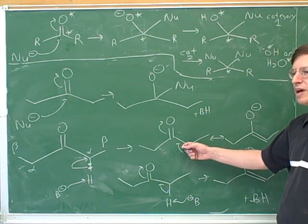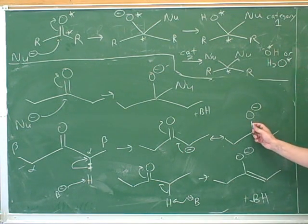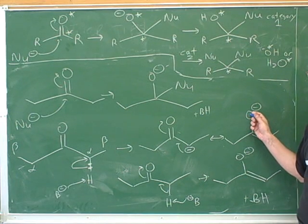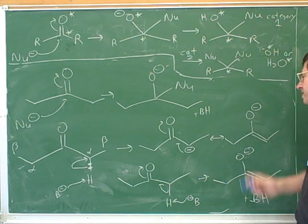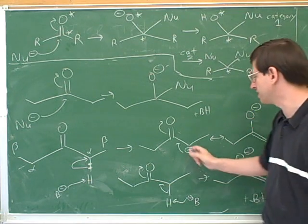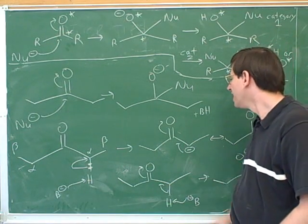The reason why this resonance form is better is because this resonance form makes it look like the oxygen is going to be the nucleophile. But this term, you're never going to see the oxygen acting like a nucleophile in an enolate. You're only going to see the carbon acting like a nucleophile.